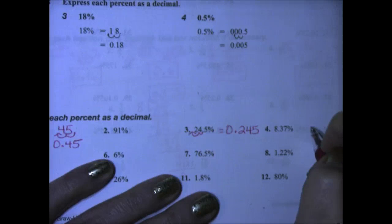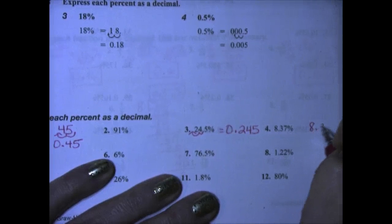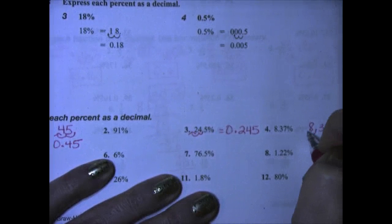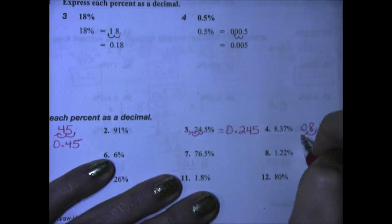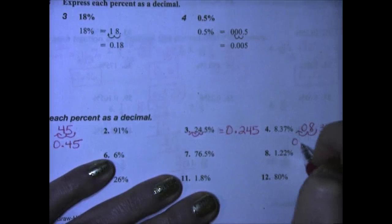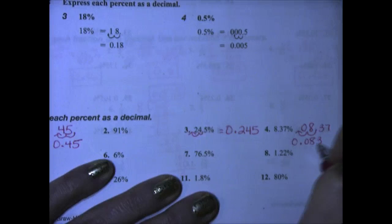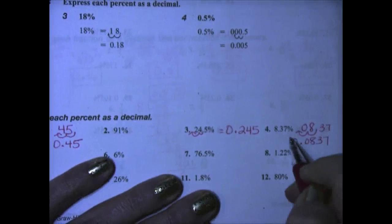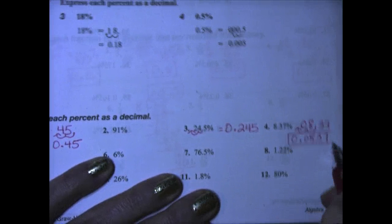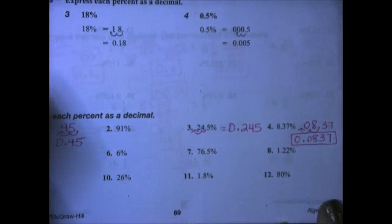Here we have 8.37%. So let's put the 8.37 out here. Move our decimal point one, need a placeholder, two. So we have 0.0837 or 837 ten-thousandths.